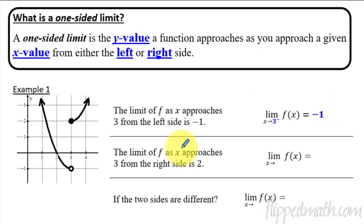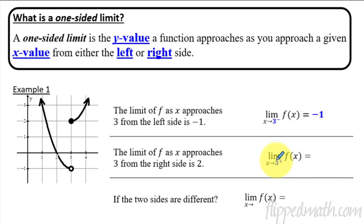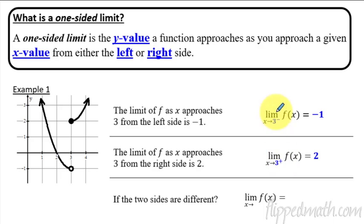Now for the right-sided limit, we approach 3 from the right side. Looking at the graph, we approach 3 from just the right side and the y value there is 2. The notation for that uses a little plus exponent on the 3, meaning from the right side of 3, and that y value is 2. So the little minus or plus exponent tells you left side versus right side of that x value.